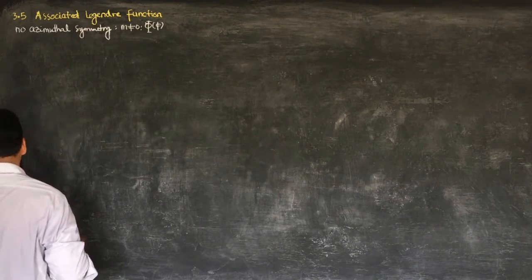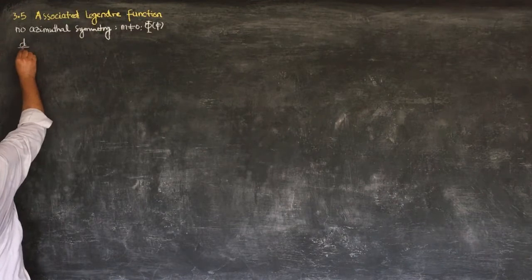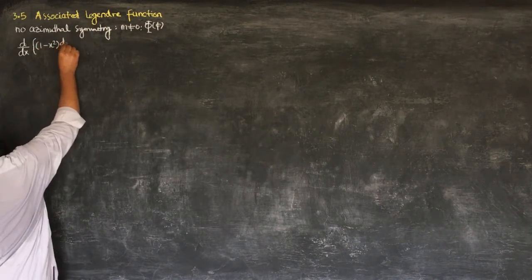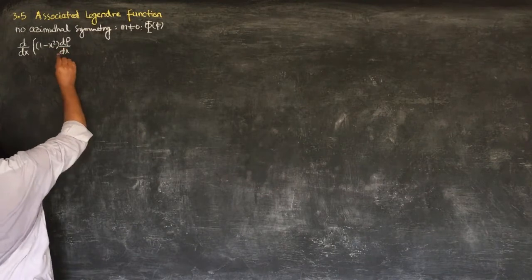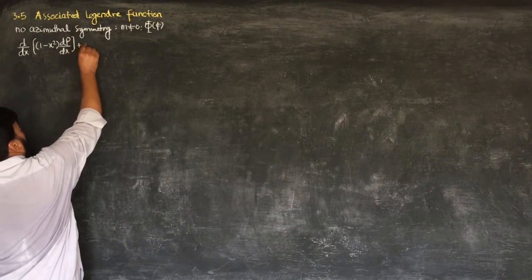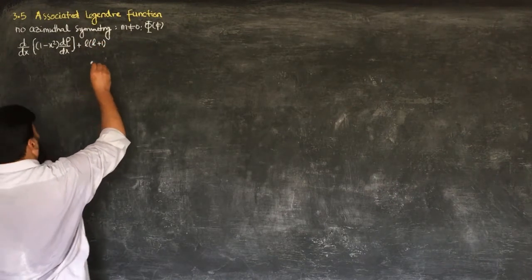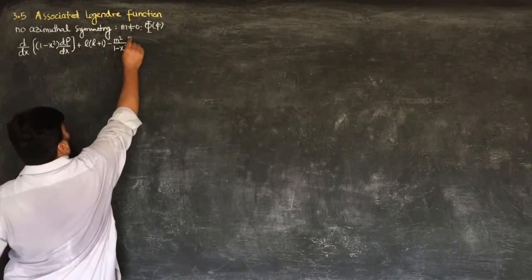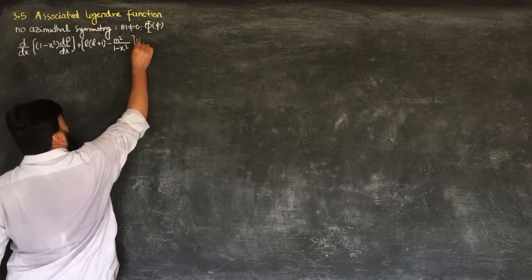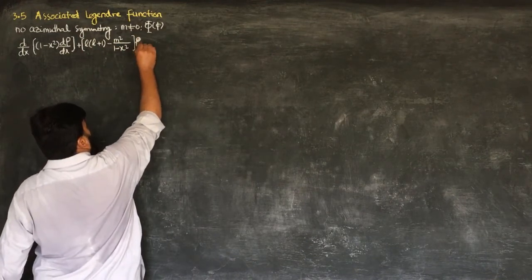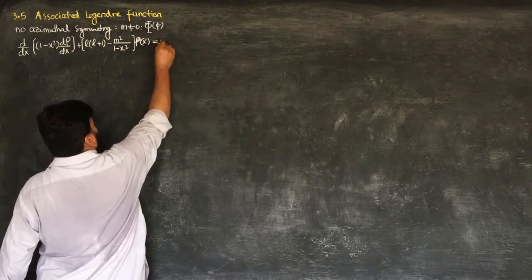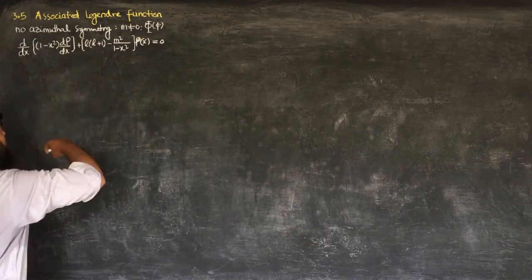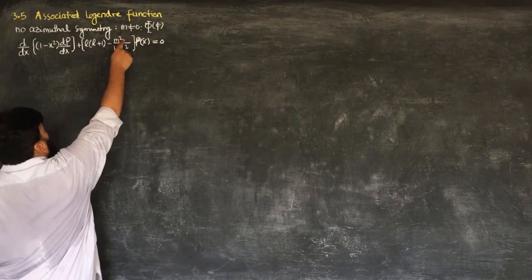In this situation we write the Legendre equation as: d/dx of (1 - x²) dP/dx, plus [L(L+1) - m²/(1 - x²)] times P = 0, where P is a function of x. This equation we call the associated Legendre equation, because the Legendre equation corresponds to M equal to zero.